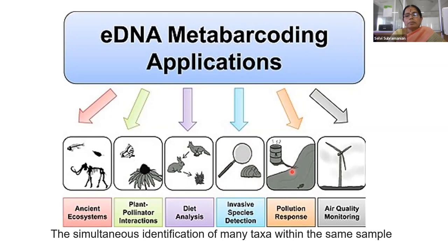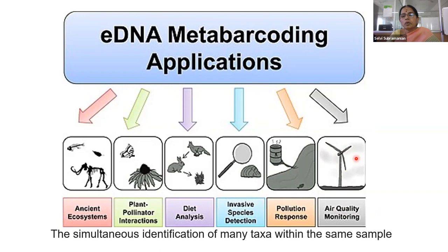Pollution monitoring uses DNA to determine whether pollution levels are high, low, or normal — and why some species are abundant while others are scarce. Air quality monitoring can also be done by collecting air samples containing pollen, spores, and suspended particles for DNA analysis. These are some of the applications of eDNA barcoding.